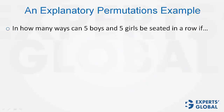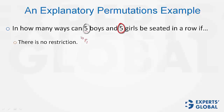In how many ways can 5 boys and 5 girls be seated in a row? Case 1: there is no restriction. In case of no restriction, 5 boys and 5 girls — in all, 10 individuals. The number of arrangements possible is 10P10, or simply, 10 factorial.